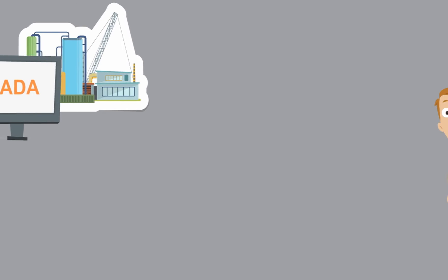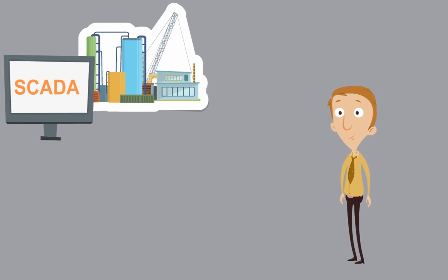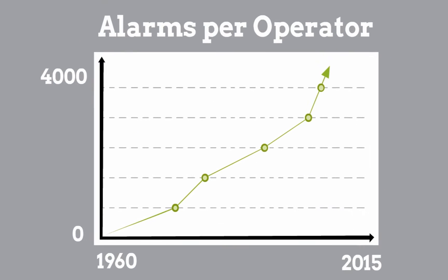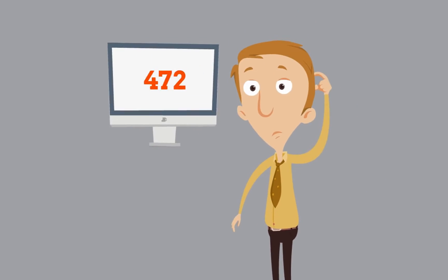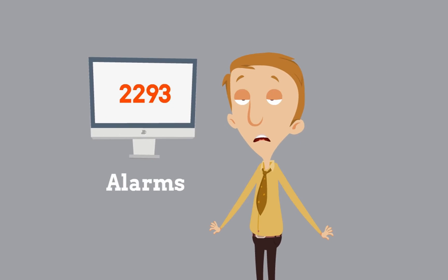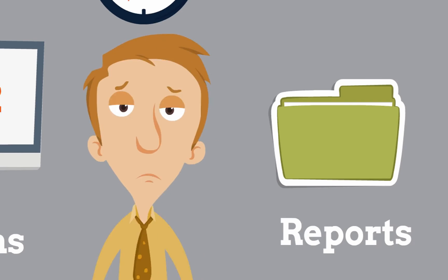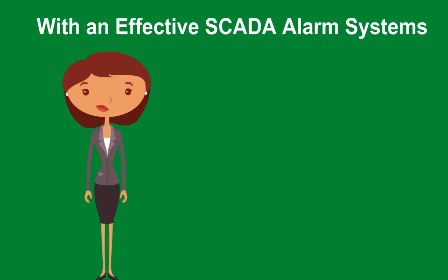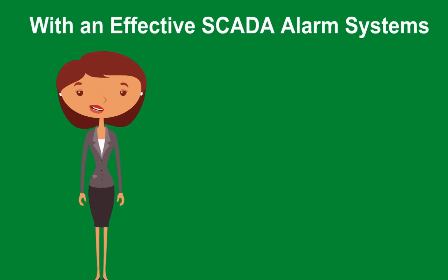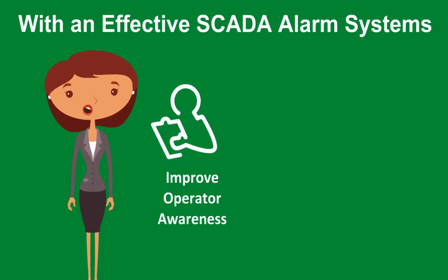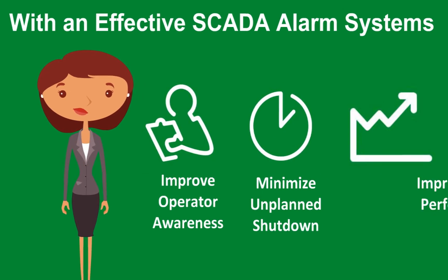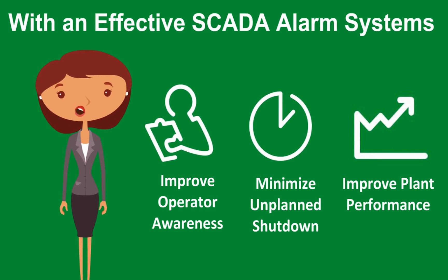Since the introduction of SCADA in the 1960s, the number of alarms per operator has increased drastically. Operators today have to deal with potentially thousands of alarms on a daily basis. In targeting the overall effectiveness of your SCADA alarm system, you can improve operator awareness and efficiency, minimise the risks of unplanned shutdowns, and improve plant performance and reliability.